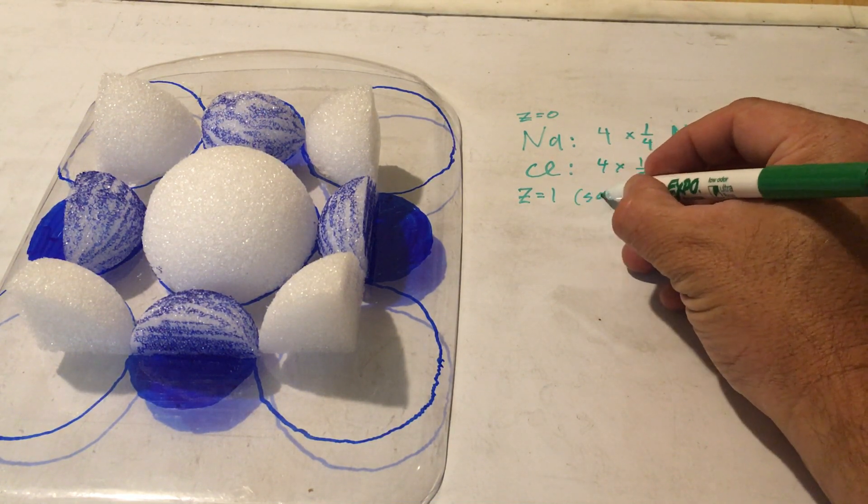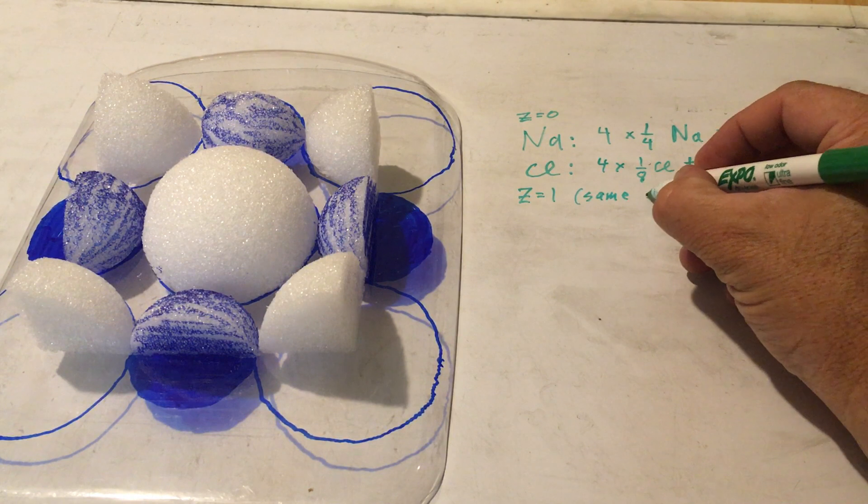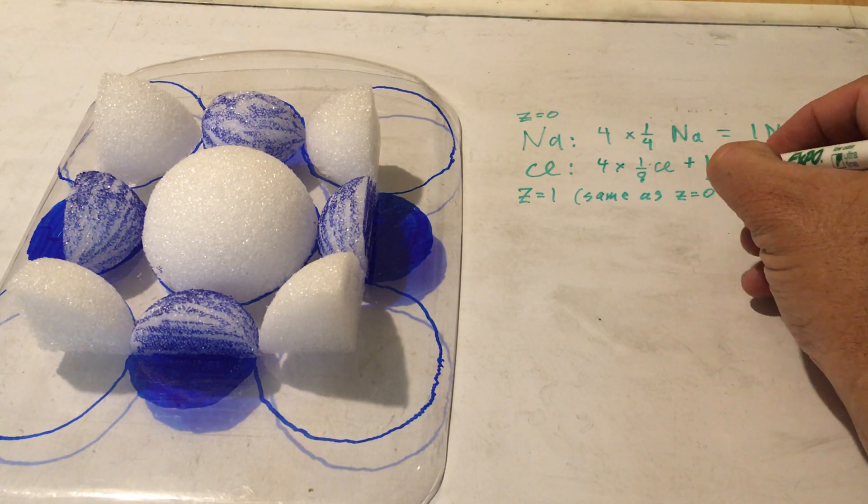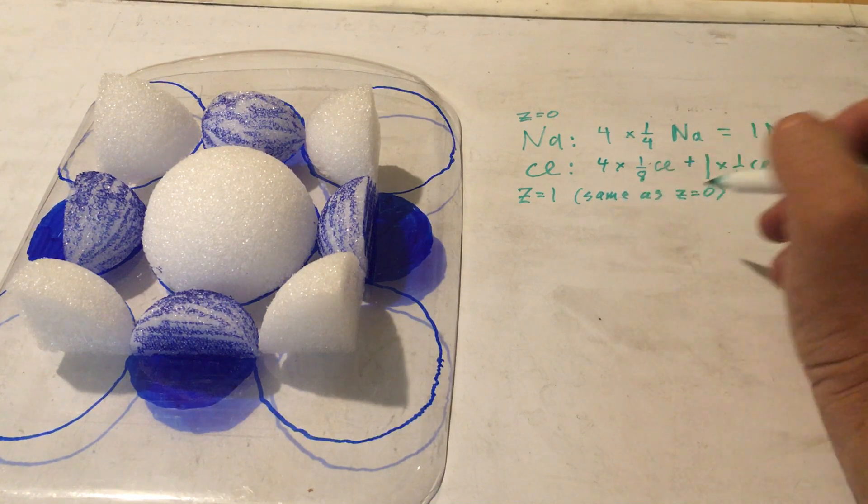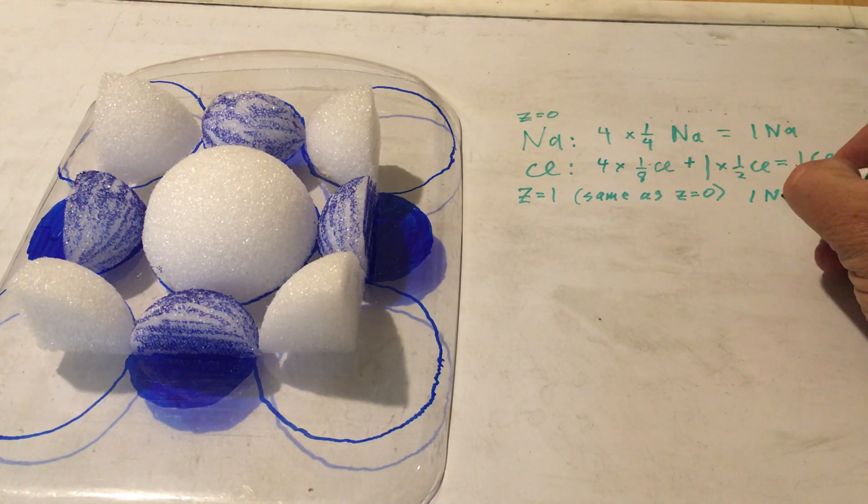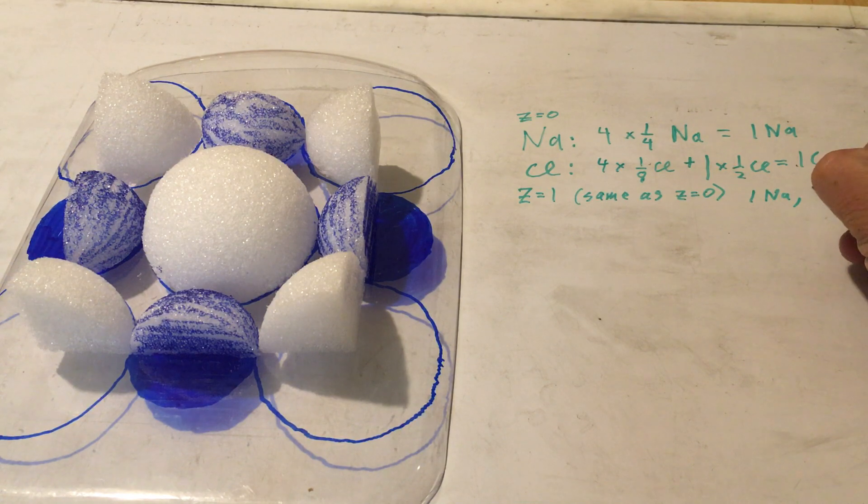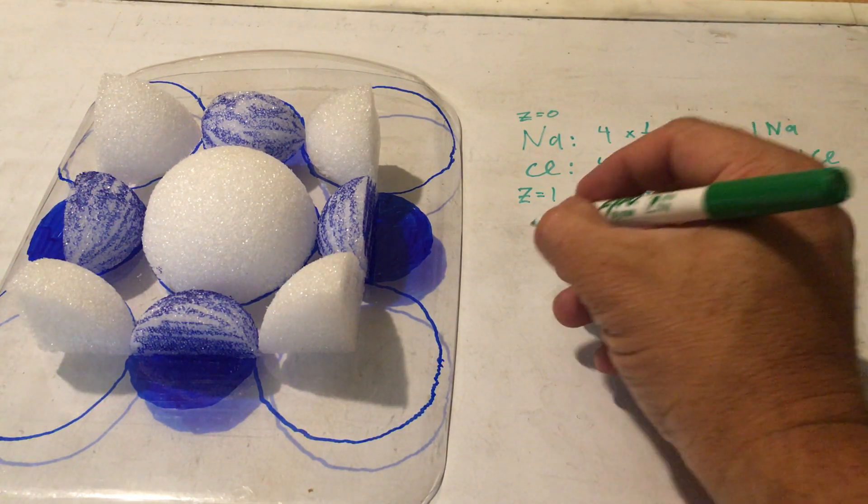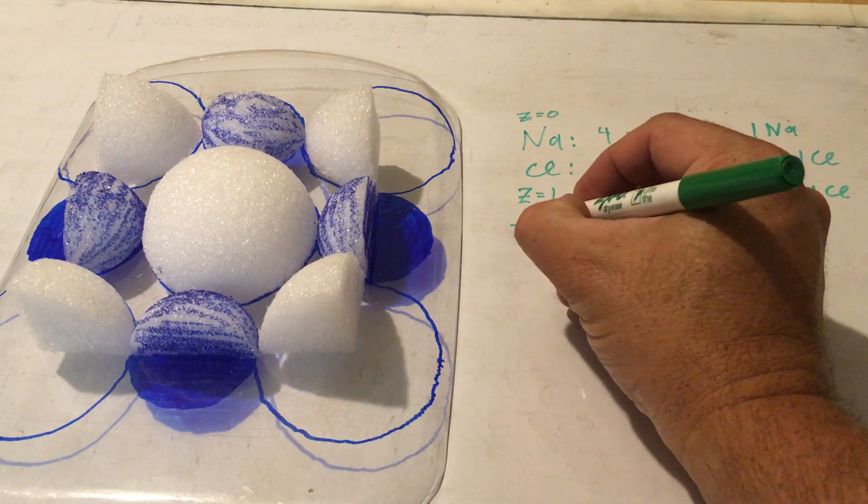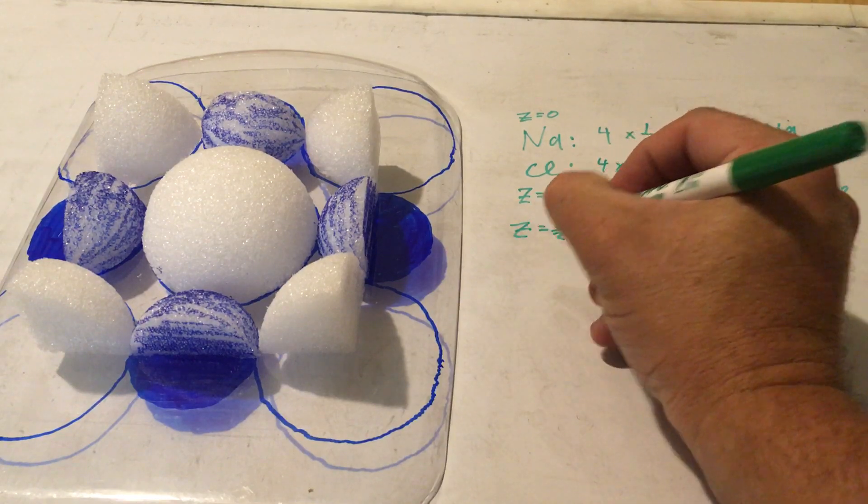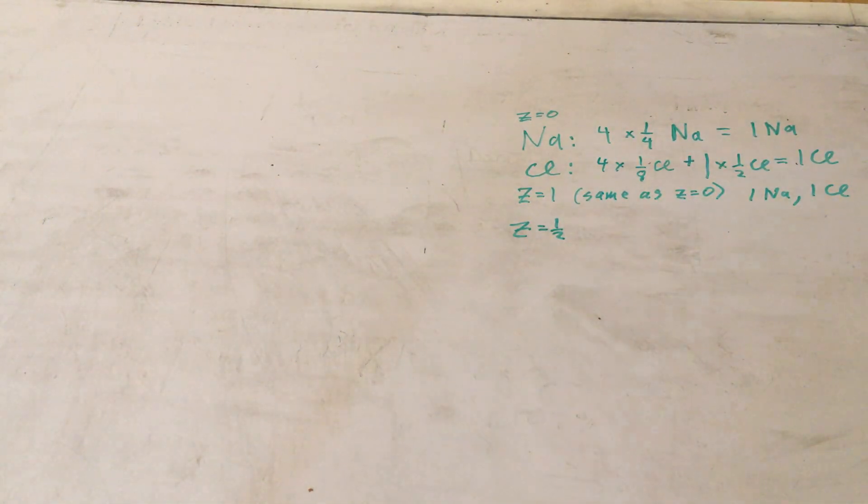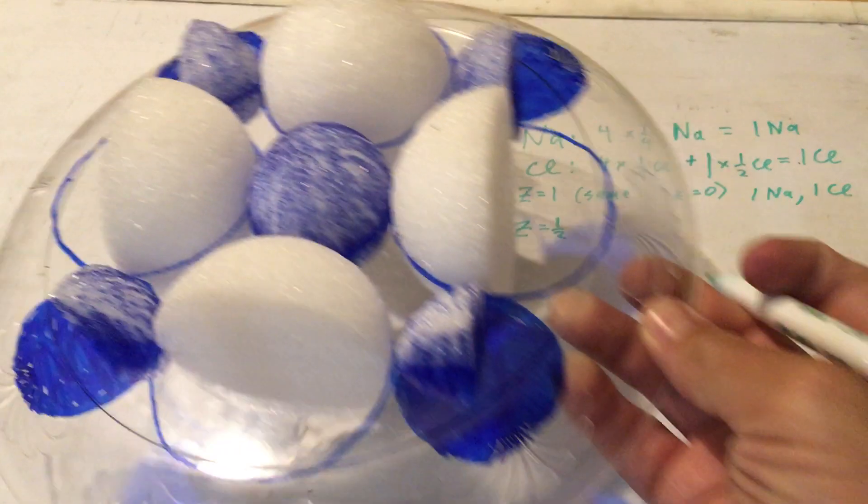So z equals one is same as z equals zero. And so we have one sodium and one chloride. So now let's look at the z equals one half layer. Pull this aside and I'll put in the z equals one half layer.